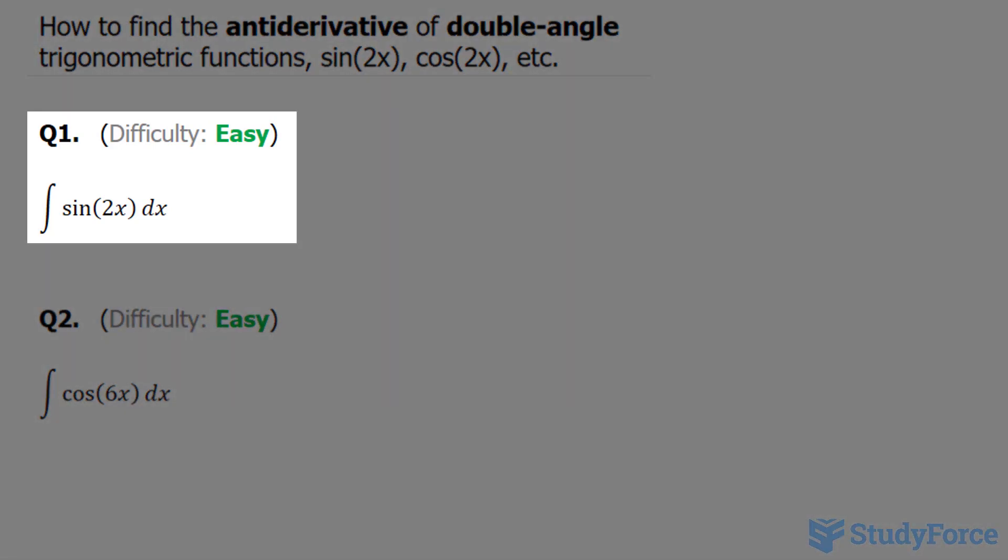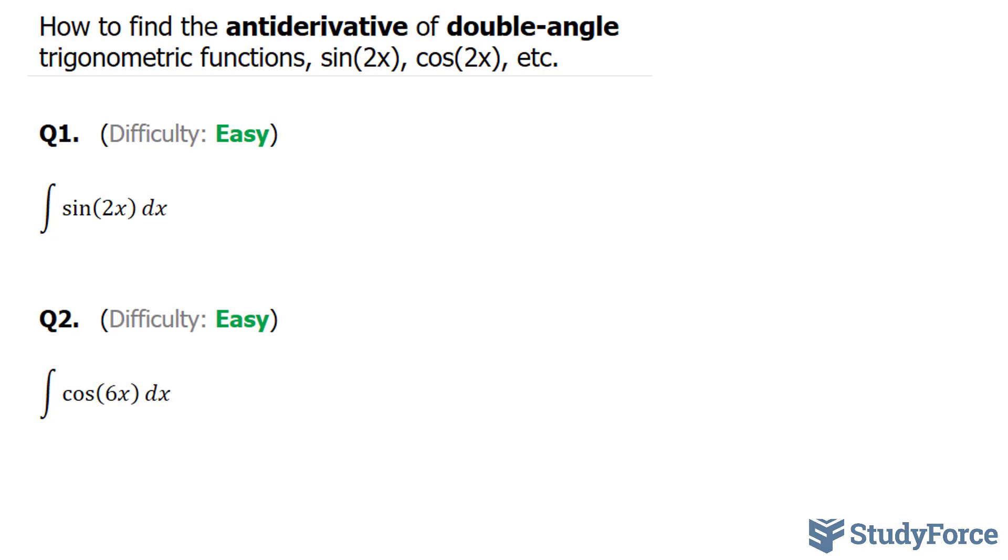Let's start with question one. In question one, they're asking us to find the integral of sine 2x dx. To find the integral of this function, you have to set u as 2x, so we'll be using u substitution here.